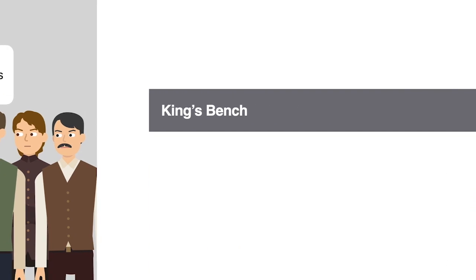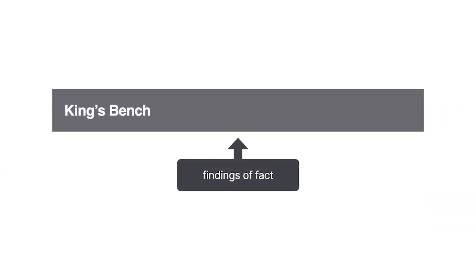The jury returned a special verdict, meaning that it made findings of fact. The court then applied the law to the jury's findings.